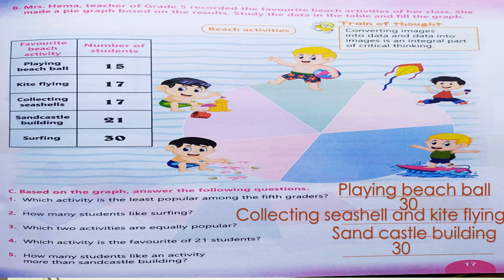On this page, information is given about the favorite beach activity of 5th graders in a table, and this data has been interpreted through a pie chart. Some questions are being asked based on the graph. The first question is: which activity is the least popular among the 5th graders? That is the least number of students — 15 — and the activity is playing beach ball.